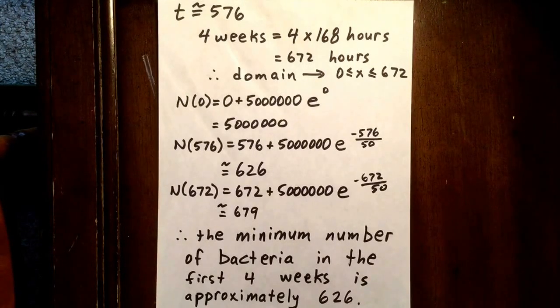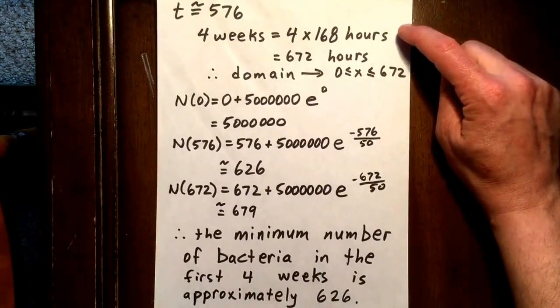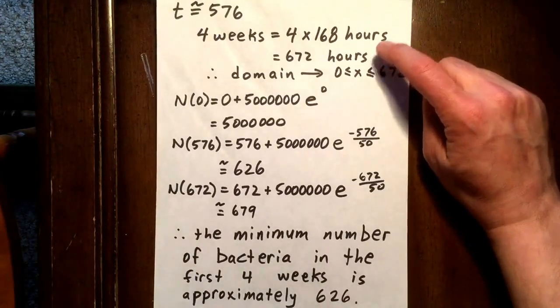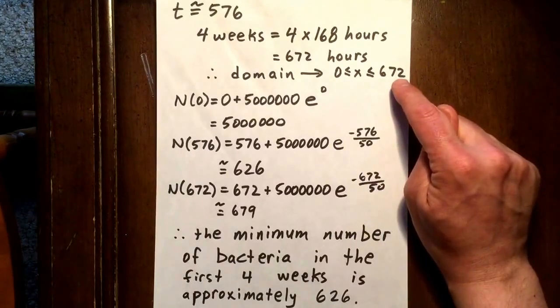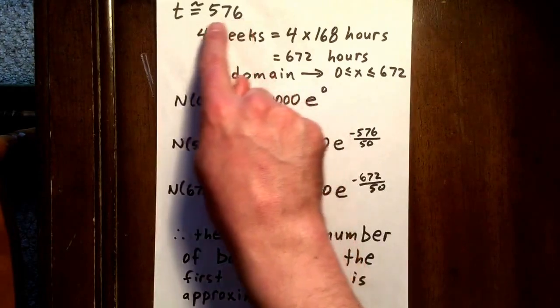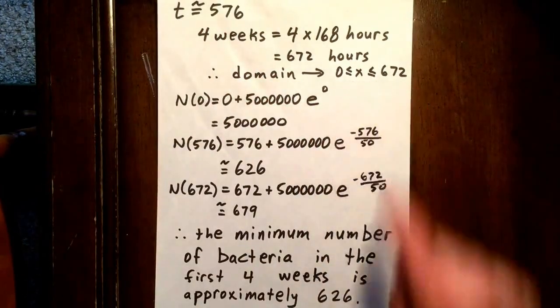So let's now determine our domain. Well, we know that in four weeks, the number of hours is 672. So we're going from a t of 0 hours to a t of 672 hours, and we know that one of our values that we'll have to check is 576 because that falls within the domain.